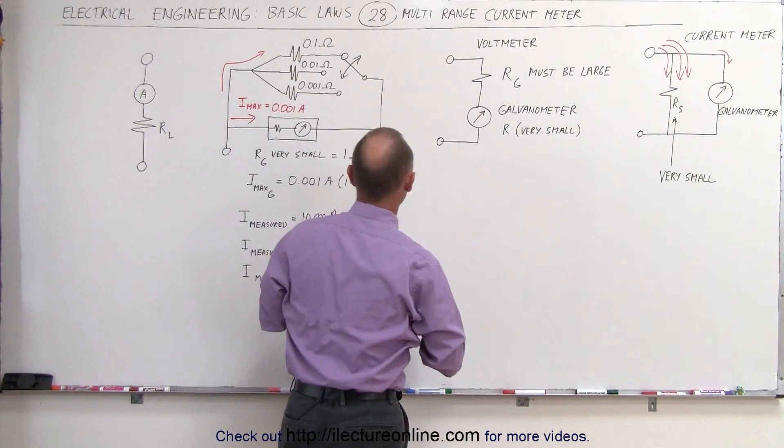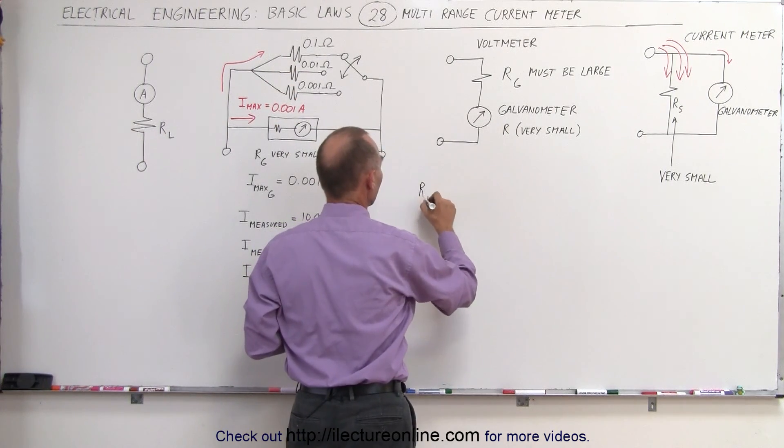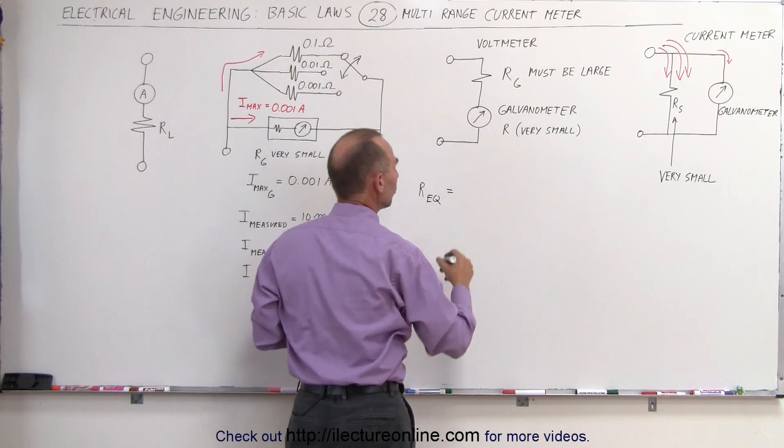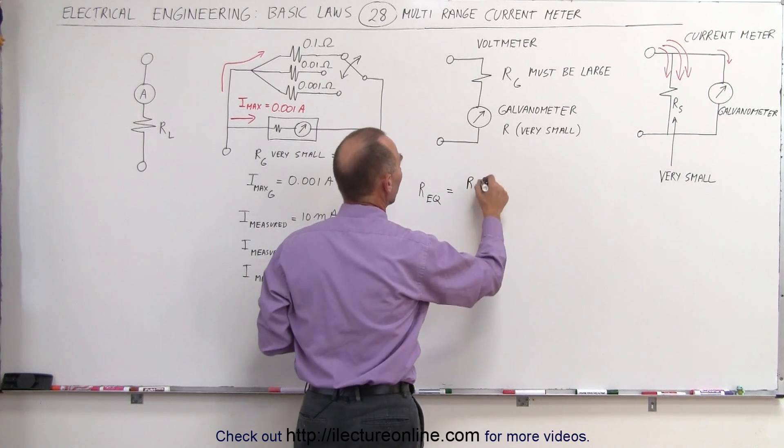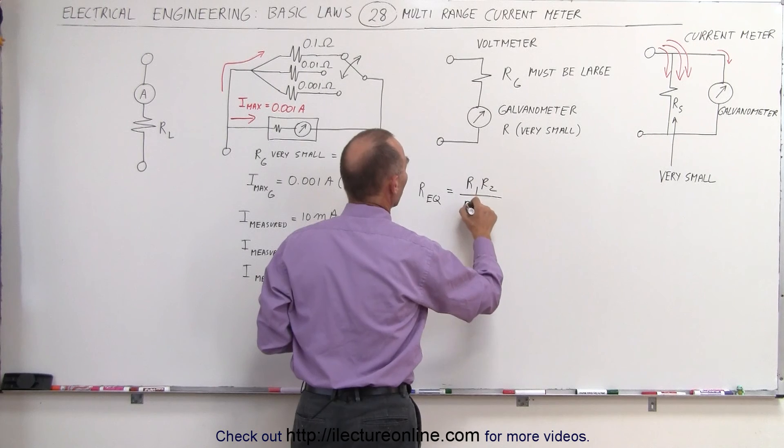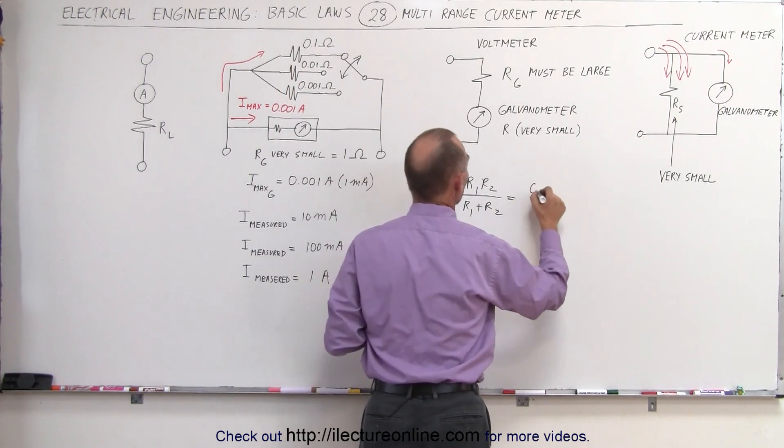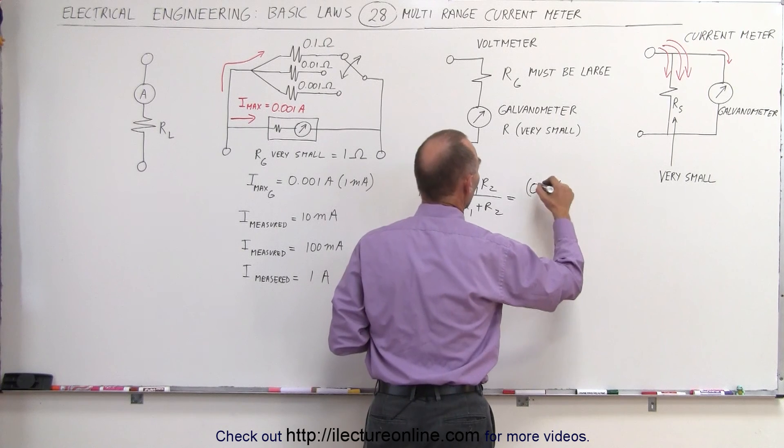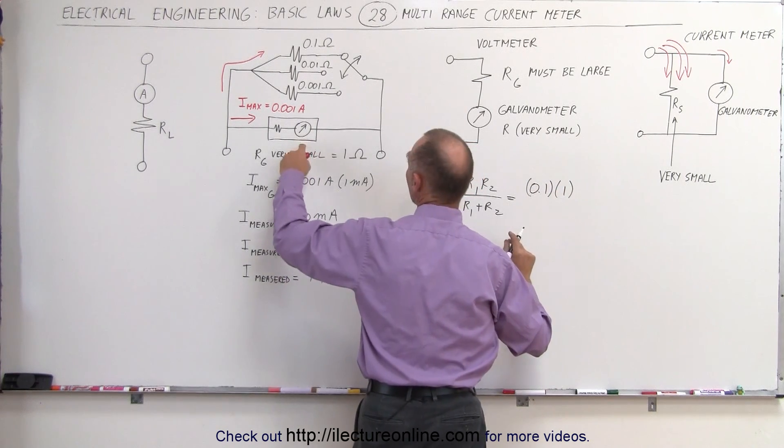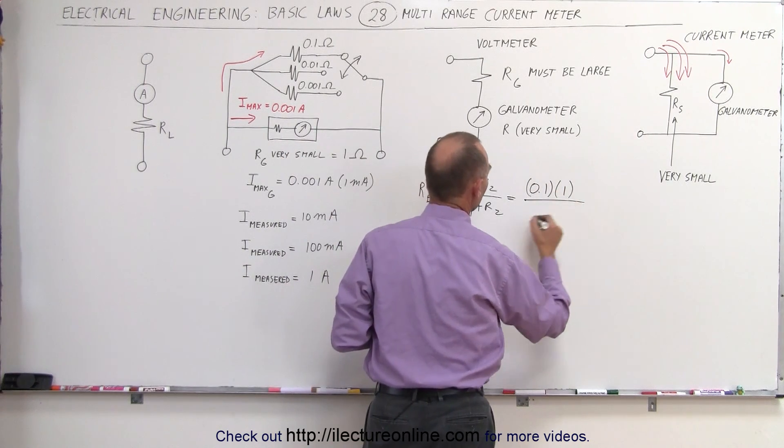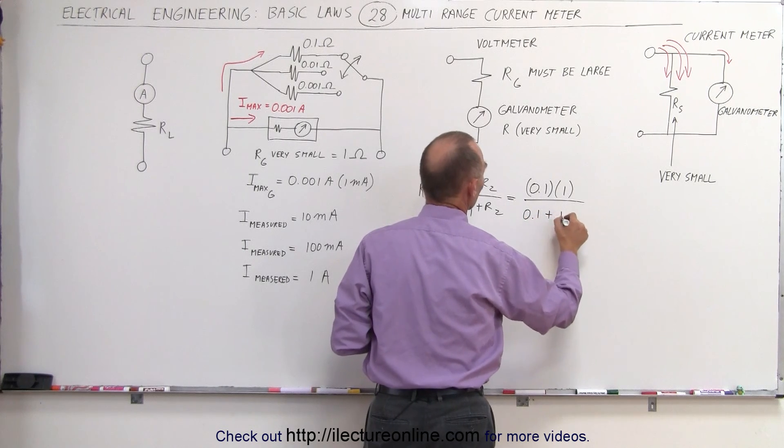If we put these two in parallel, the equivalent resistance for two resistors in parallel is R1 times R2 divided by R1 plus R2. If R1 is equal to 0.1 ohm and R2 is equal to 1 ohm, R2 being the resistor in the galvanometer, divided by 0.1 plus 1.